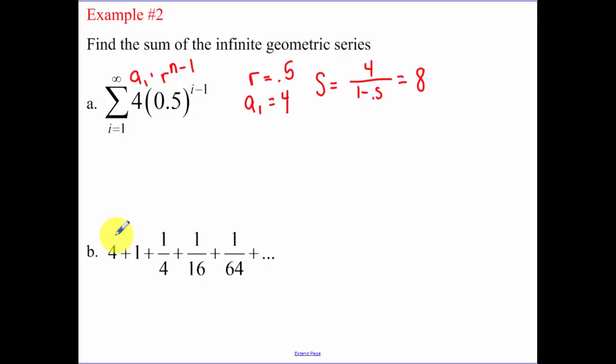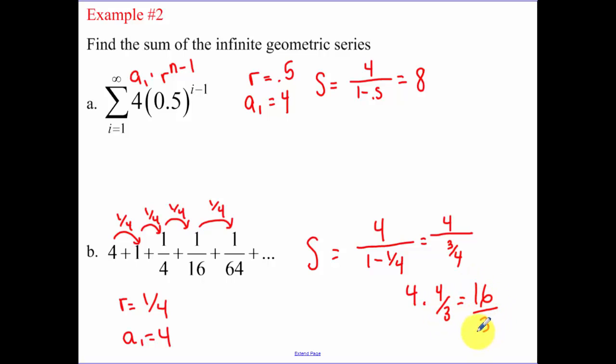Next one. Just confirm this is a geometric series. We multiply by 1 fourth consistently. So our common ratio is 1 fourth. Our first term is 4. So our sum equals 4 over 1 minus 1 fourth, which is 4 over 3 fourths. 4 times 4 over 3. Our value there is 16 over 3 for our sum.